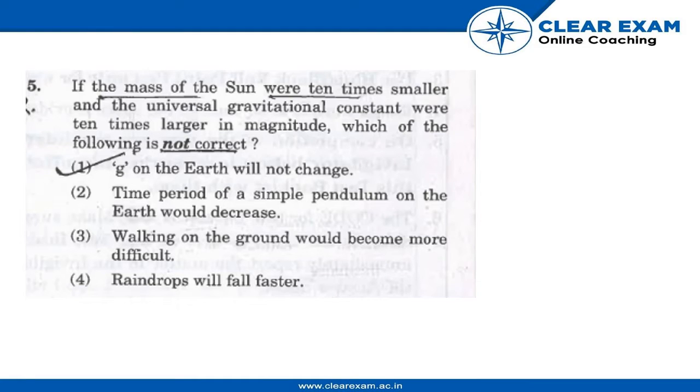In the given question, we have if the mass of the sun were 10 times smaller and the universal gravitational constant were 10 times larger in magnitude, which of the following is not correct?